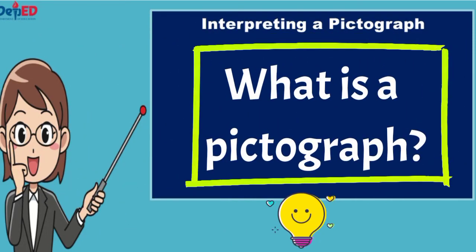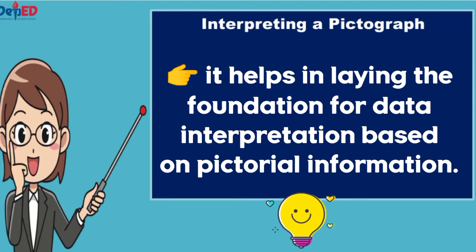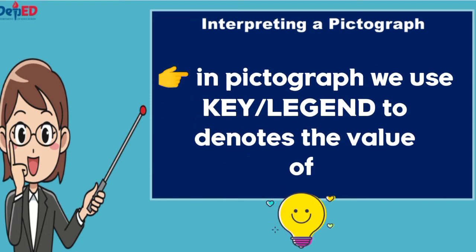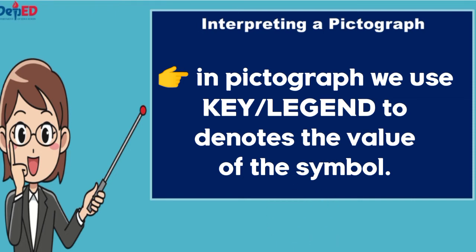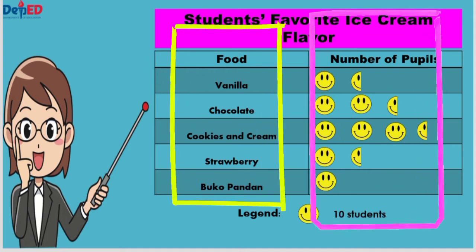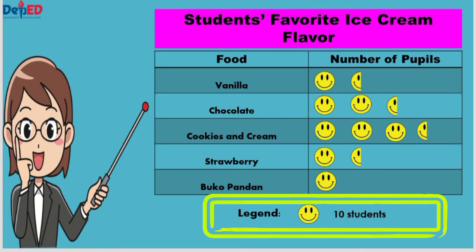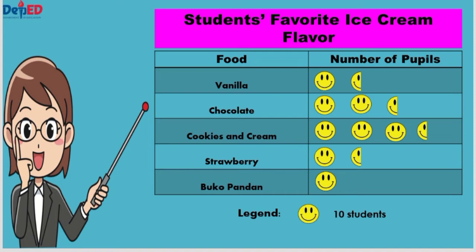Another kind of graph is a pictograph. A pictograph is a representation of data using images or symbols. It helps in laying the foundation for data interpretation based on pictorial information. In a pictograph, we use a key which denotes the value of the symbol. Let us study this pictograph. A survey was conducted for 100 students by a fast food junction to understand the demand for different flavors of ice cream available in their outlet. This pictograph uses a smiley as a symbol, which means 10 students.